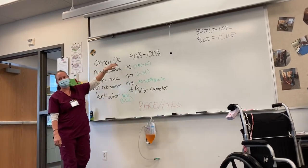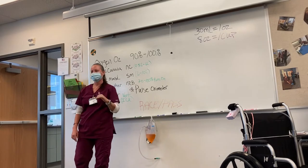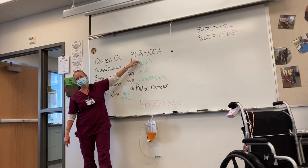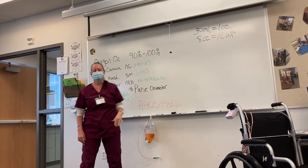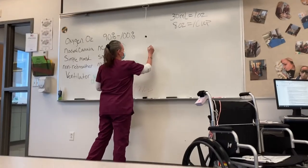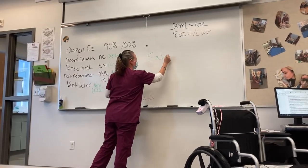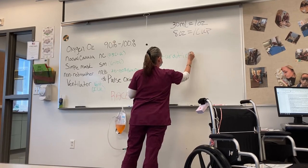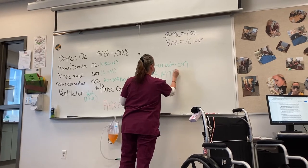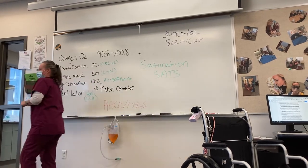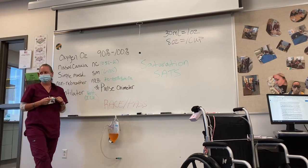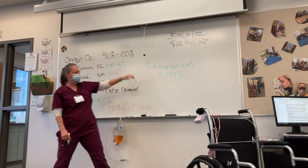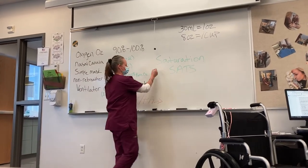Oxygen is abbreviated O2. We will say, what is our O2? — we are asking you, what is our oxygen level? Their parameter is 90% to 100%. We are looking at oxygen saturation levels. We are going to be recording, charting, and reporting their O2 stats — that's their oxygen saturation levels.